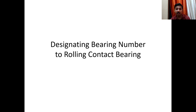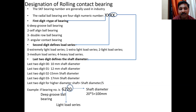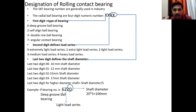First we will discuss the method of designating a bearing number to ball bearings — the designation of rolling contact bearings using SKF bearing numbers, which are generally used in industry. Radial ball bearings are generally designated by a 4-digit numeric number, and each and every digit of this number defines something specific about the bearing.